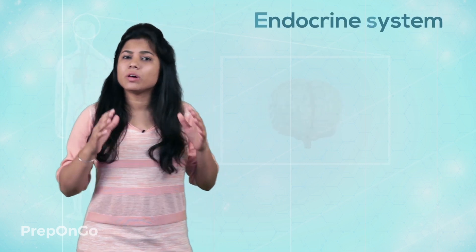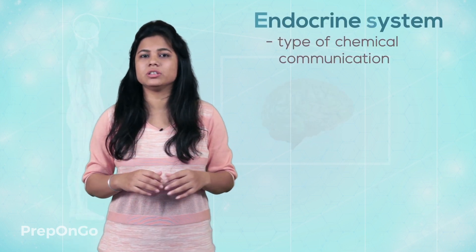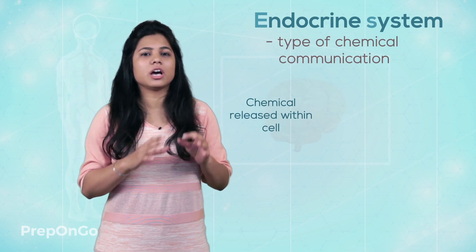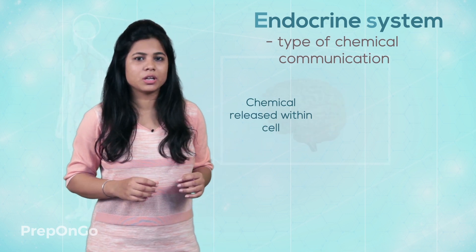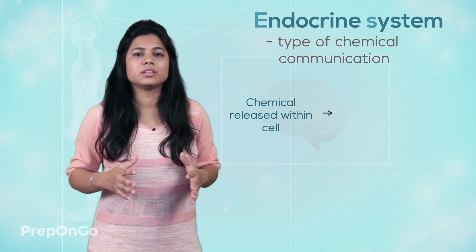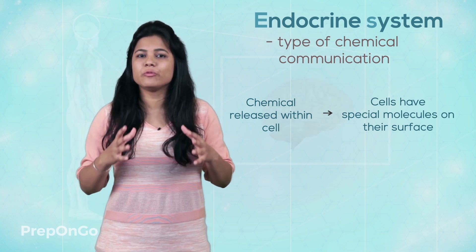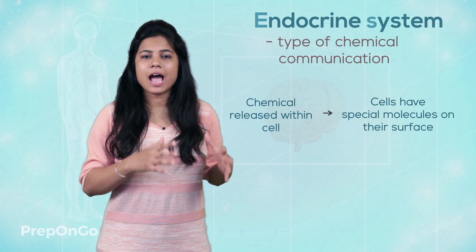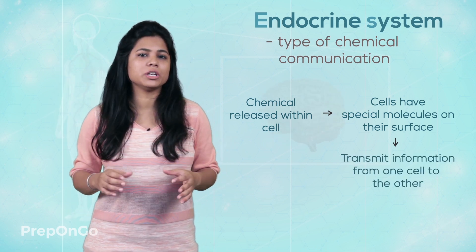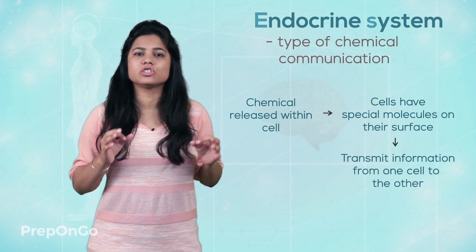So animals have another method for the communication between the cells, namely the chemical communication or the endocrine system. Under this chemical communication, a chemical is released around the original cell. In this method, the cells have special molecules on the surface which detect these chemicals and transmit this information to each and every cell.